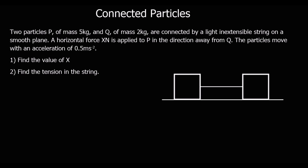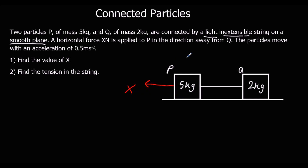In this video we're going to look at problems involving connected particles. We've got P and Q — P has mass five kilograms and Q has mass two kilograms. They're connected by a light inextensible string, meaning it has no mass and won't extend. It's on a smooth plane, so no friction. A horizontal force X newtons is applied to P in the direction away from Q.